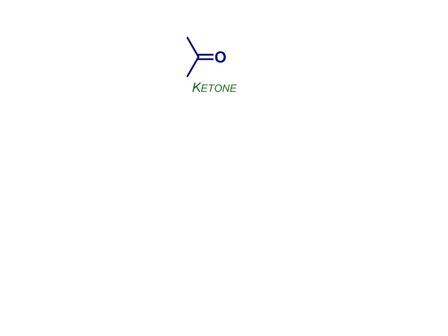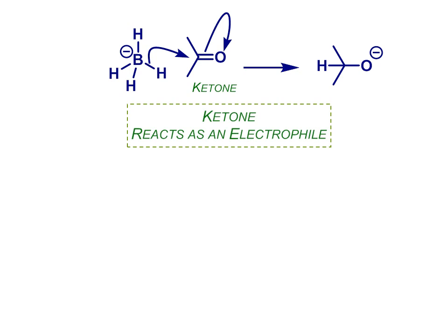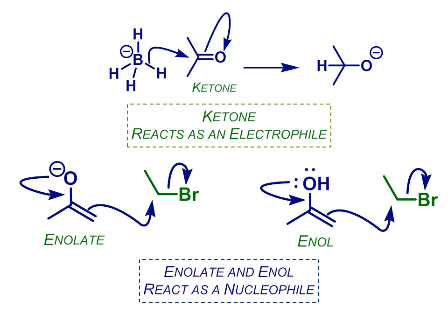Now remember that the carbonyl group itself is an electrophile at the carbonyl carbon. It reacts with nucleophiles like hydride shown here. So the carbonyl group in a ketone, aldehyde or ester reacts as an electrophile. But the corresponding enol or enolate reacts as a nucleophile and it does so from the alpha position.